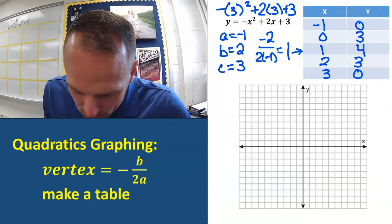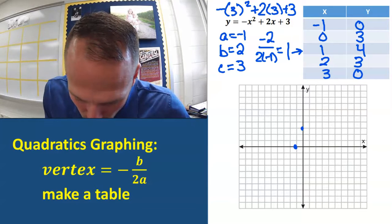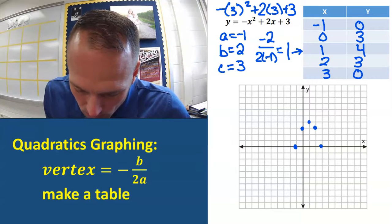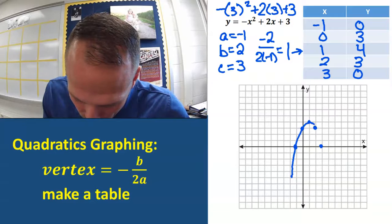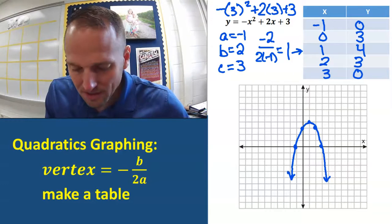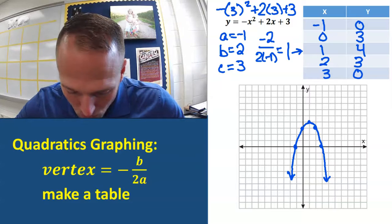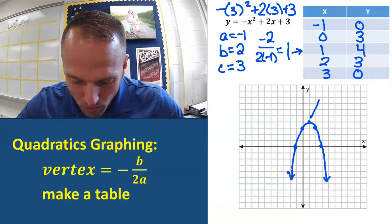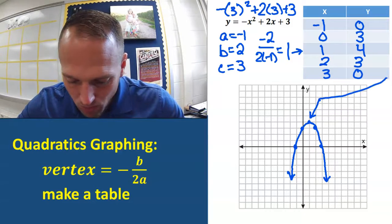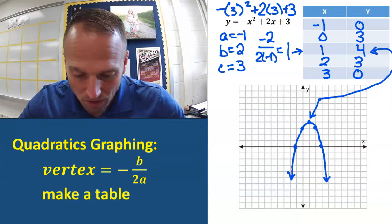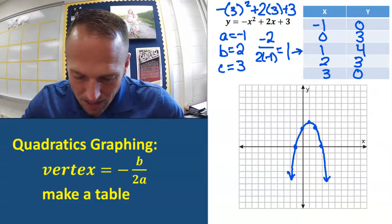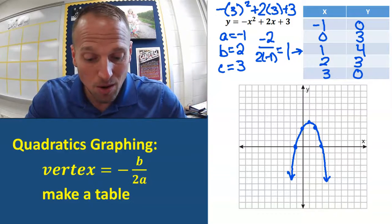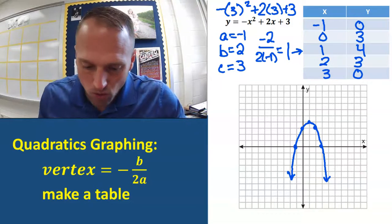Let's graph this. The points are: negative 1 comma 0, 0 comma 3, 1 comma 4, 2 comma 3, and 3 comma 0. Once again, I can see right through the middle an axis of symmetry where it's the same on both sides. The vertex is right there, matching what we found with negative b over 2a. And also, from the intro video, we knew that if a is positive it opens up, but in this case a was negative so it goes down.